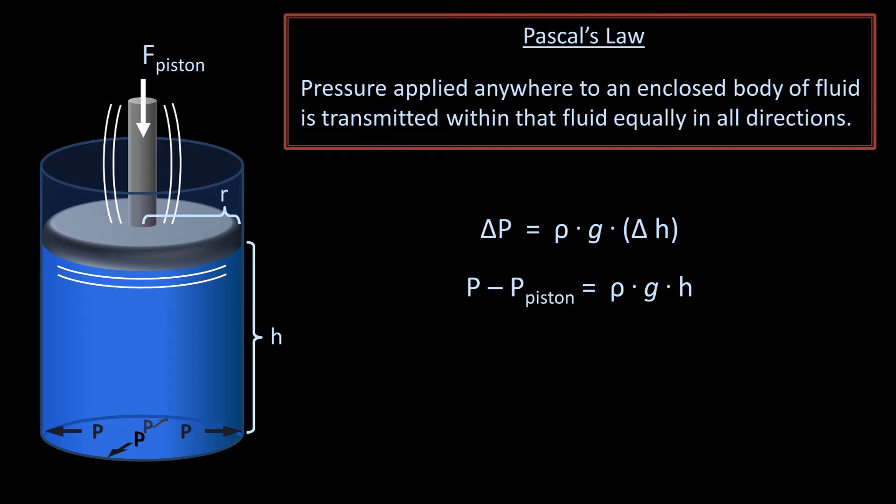If you recall, pressure equals force divided by surface area. So the piston pressure equals the force divided by the surface area of the piston, which assuming it is a perfect circle, is equal to pi r squared. And we end up with an analogous solution.